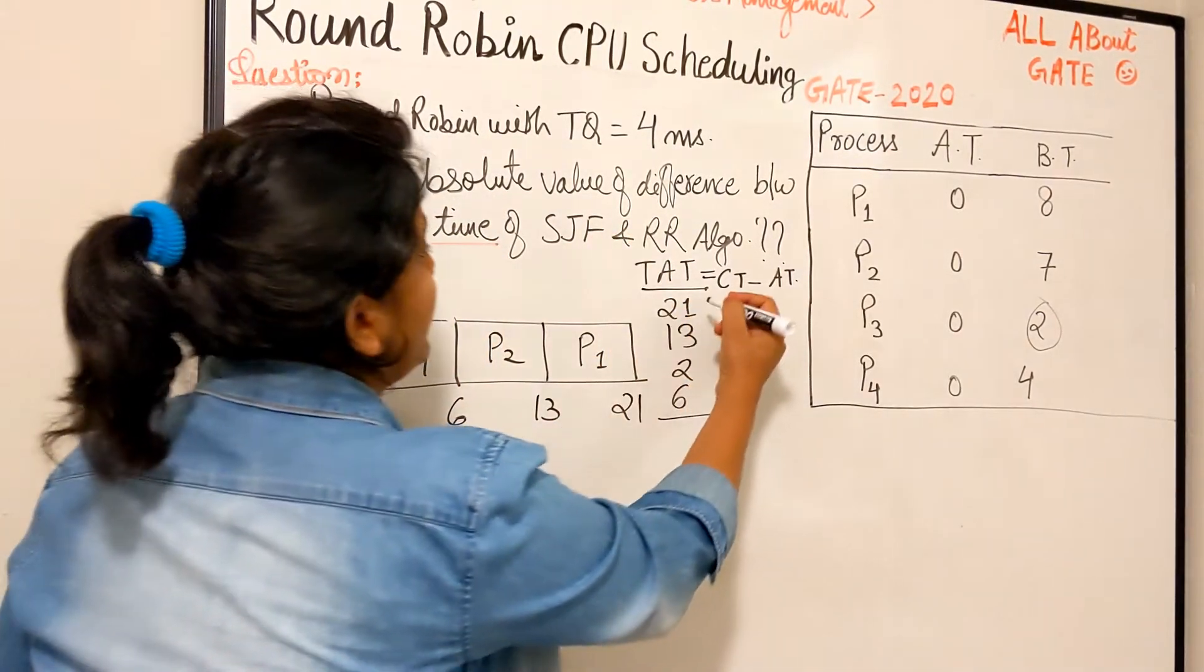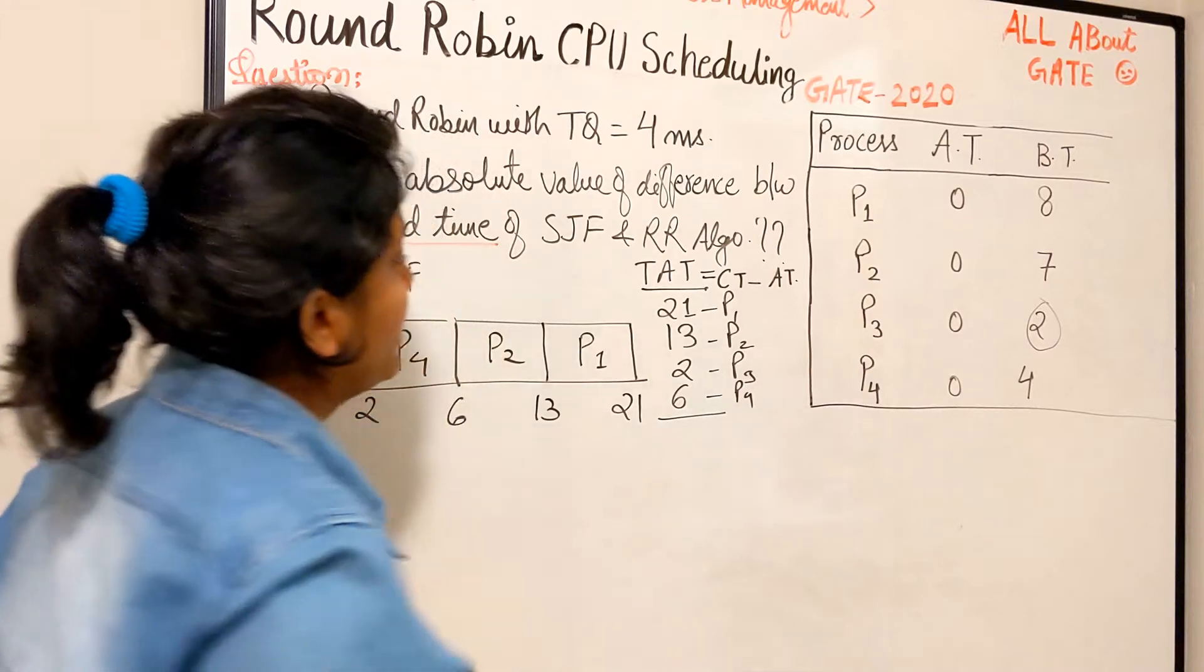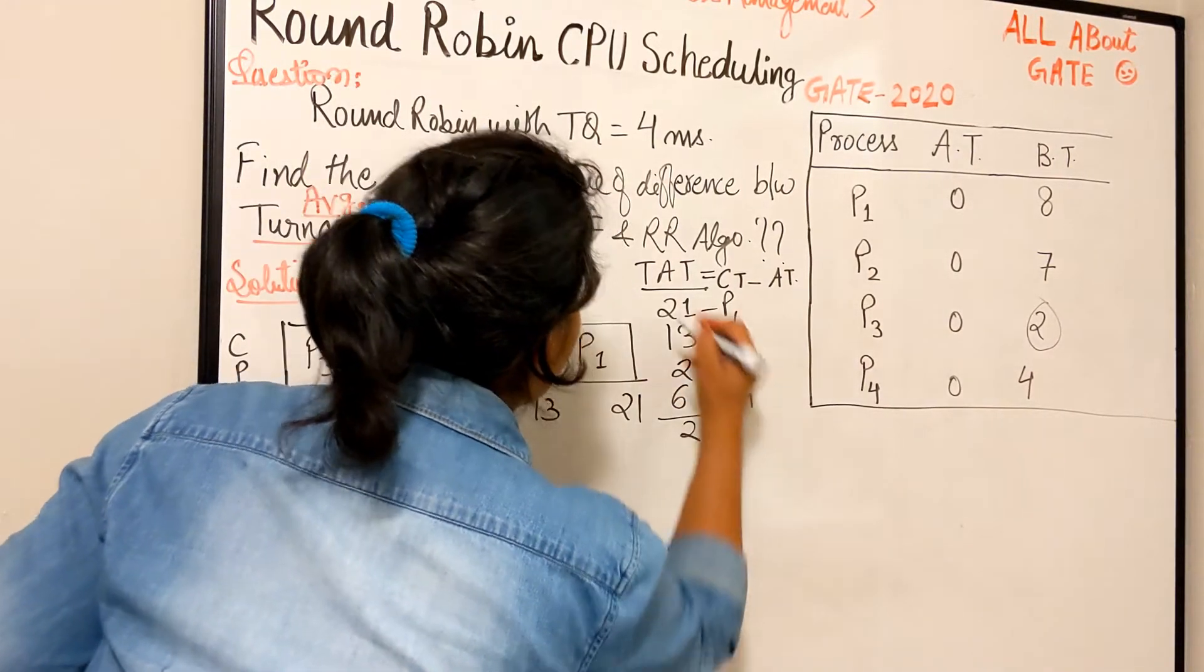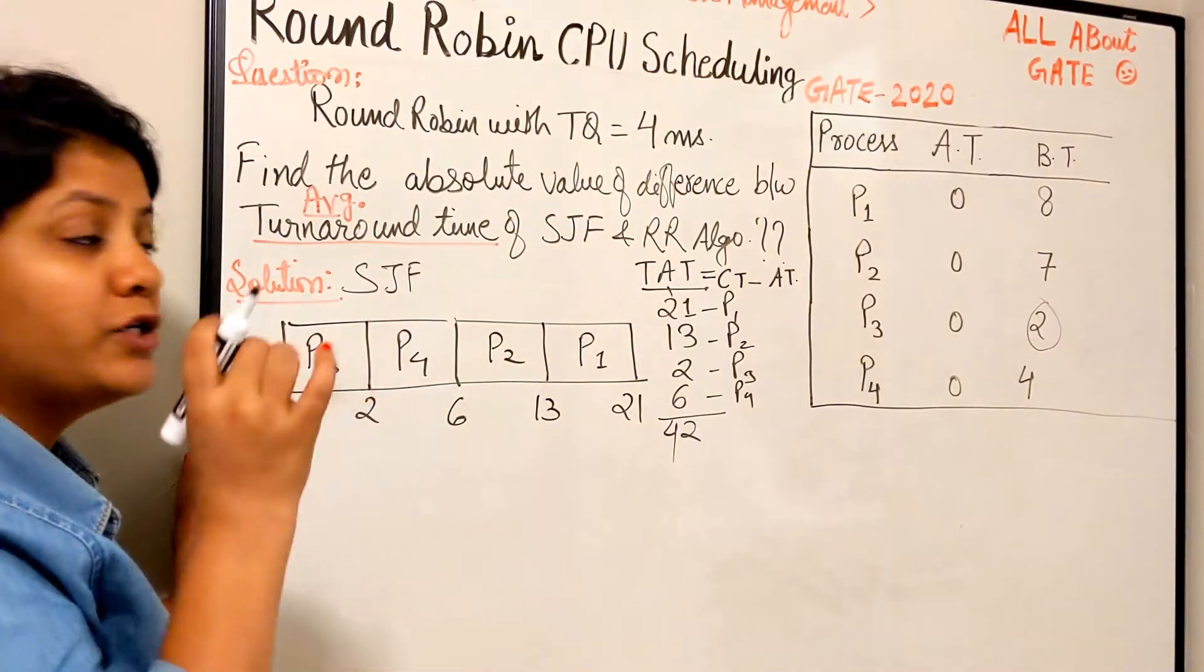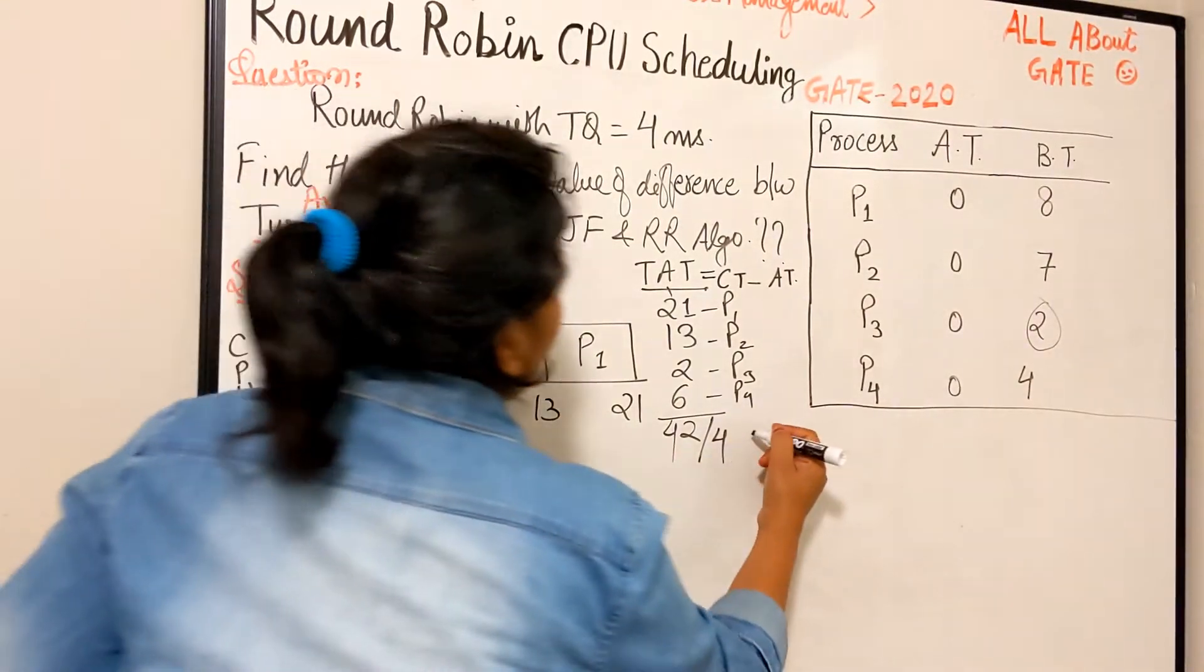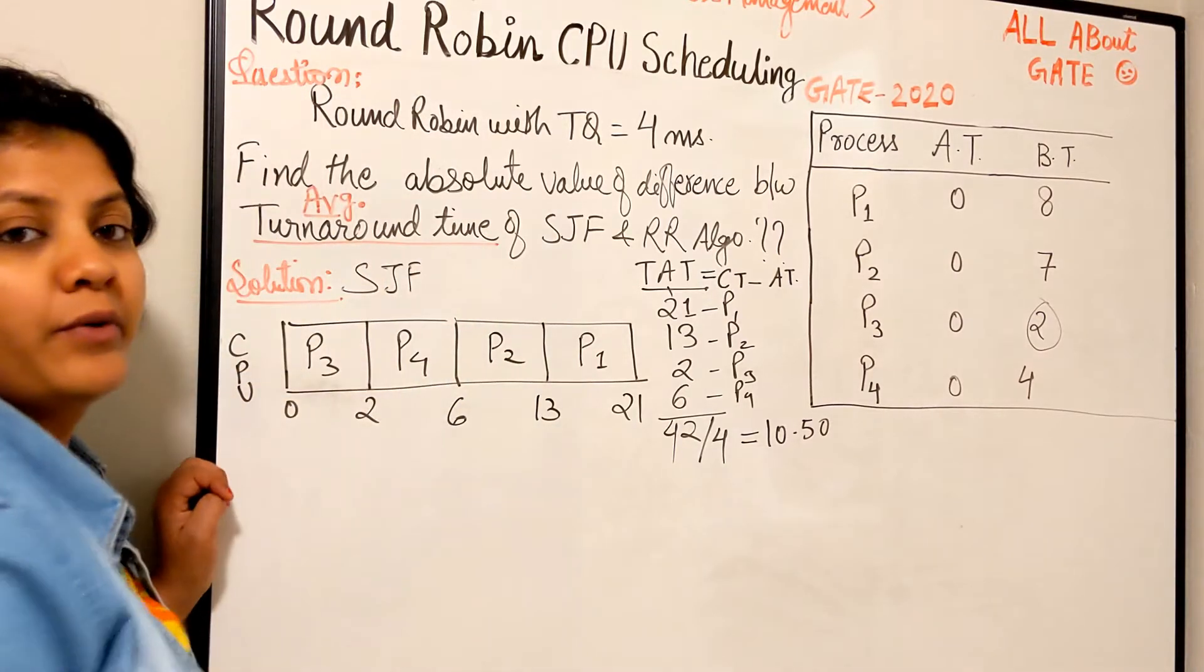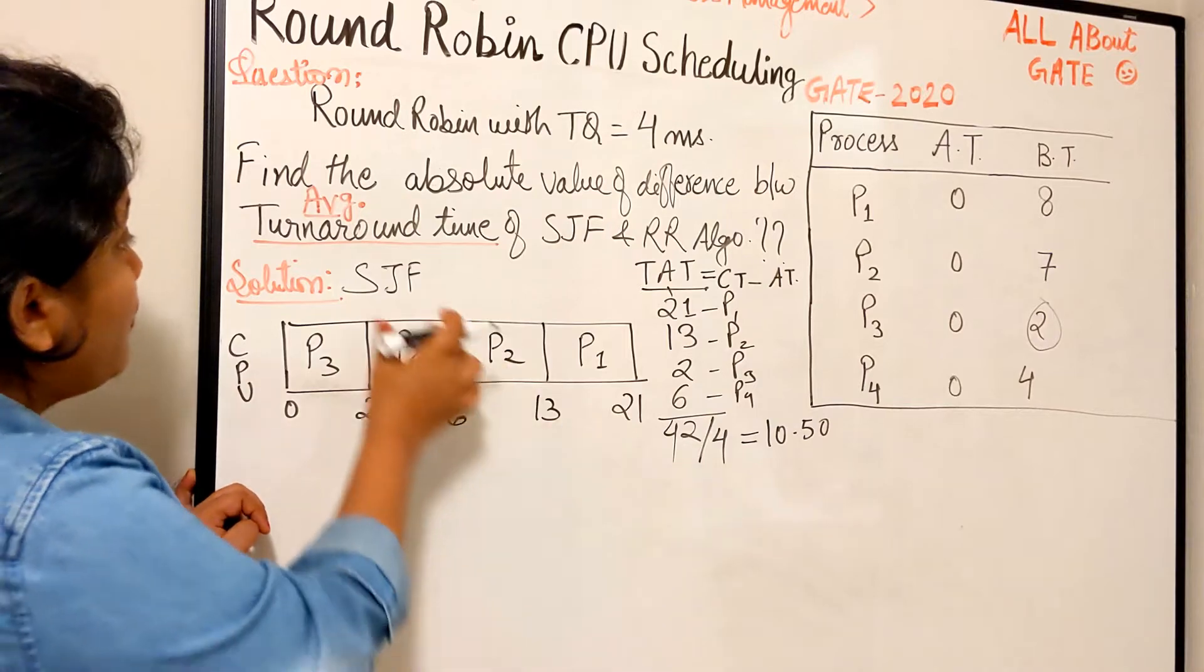Let me write P1, P2, P3, P4. Let's quickly get the sum: 21 plus 13 is 34, plus 2 is 36, plus 6 is 42. So 42 is the total turnaround time. We need the average, so divide by 4. 42 divided by 4 becomes 10.50. That's the average turnaround time for SJF.